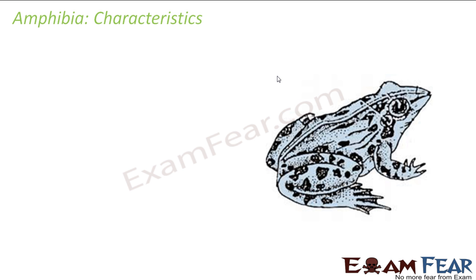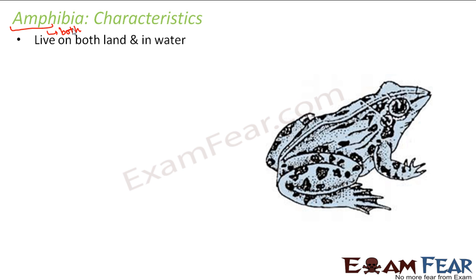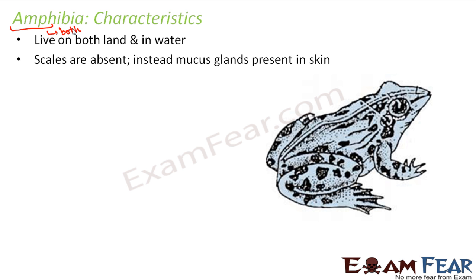The next group is Amphibia. The word 'amphi' means 'both,' so amphibians are organisms that live on both land and water.